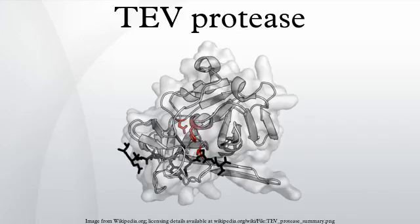TEV proteases are highly sequence-specific cysteine proteases from tobacco etch virus. It is a member of the PA clan of chymotrypsin-like proteases. Due to its high sequence specificity, it is frequently used for the controlled cleavage of fusion proteins in vitro and in vivo.